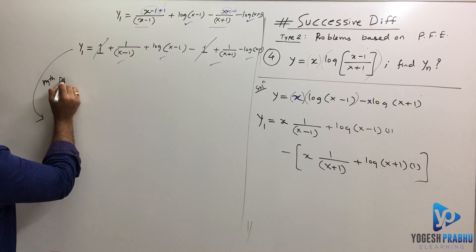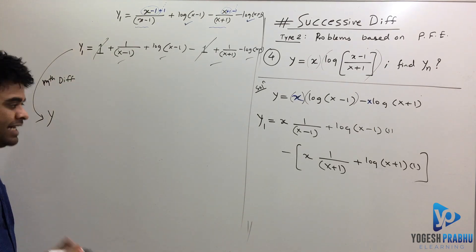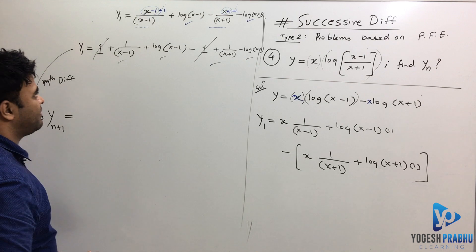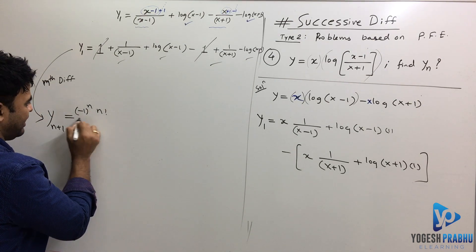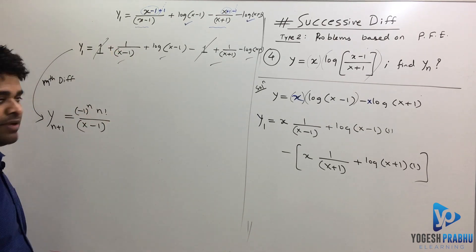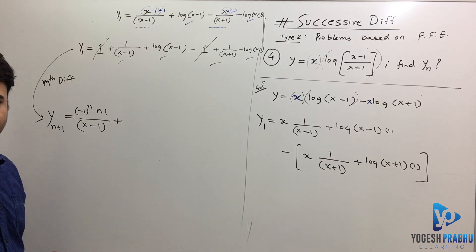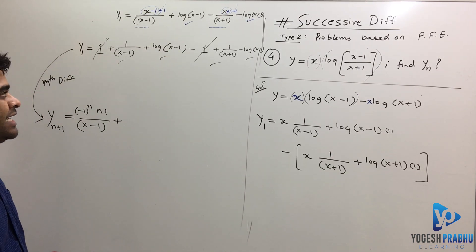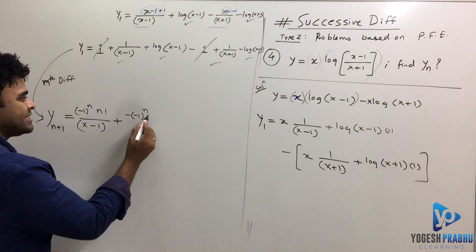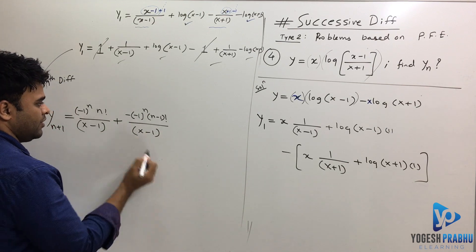Now differentiating n more times — remember this is already y₁, so n further differentiations give yₙ₊₁. The nth derivative of 1/(x−1) gives (−1)ⁿ · n! / (x−1)ⁿ⁺¹. Then for the nth derivative of log(x−1), the formula gives −(−1)ⁿ · (n−1)! / (x−1)ⁿ. Note this exponent is n, not n+1.